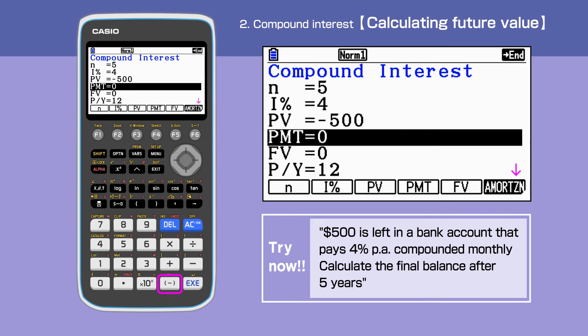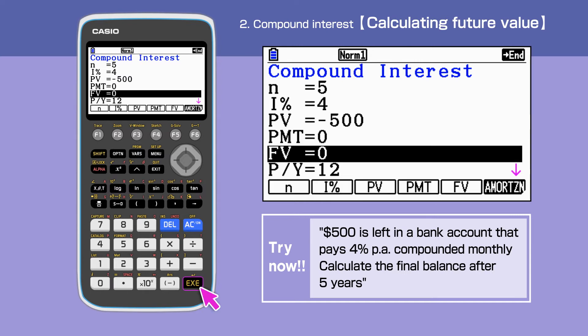As the money comes out of our pocket, we use bracket minus for negative values. Since there is no regular payment, PMT is 0. And FV, future value can be left blank.